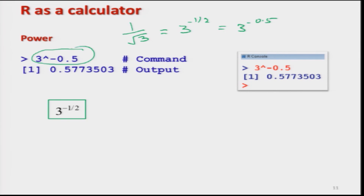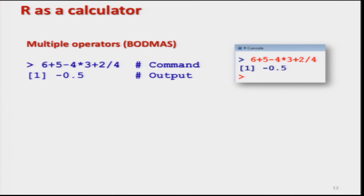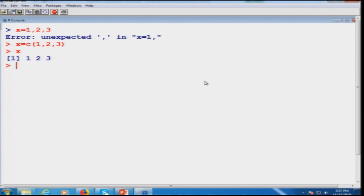If you have more than one operator at the same time — plus, minus, multiplication, division — the BODMAS rule applies in R software as well, the same rule we use in regular mathematics.